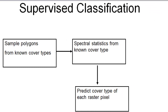Welcome back to remote sensing applications using ArcGIS. This week we'll do something called supervised classification — the process of using sample polygons from known cover types, extracting statistics from your remotely sensed image within each polygon, and then for every pixel in the image predicting the cover type based on those spectral statistics. This strategy is typically used to produce land cover maps.